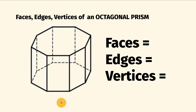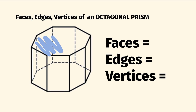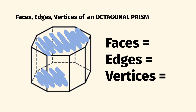We'll start out by having a look at the number of faces. These are the flat surfaces on the octagonal prism here. So let's go through and count them. On the top we have this face right here, on the bottom we have this face right here. Both of these are octagons.